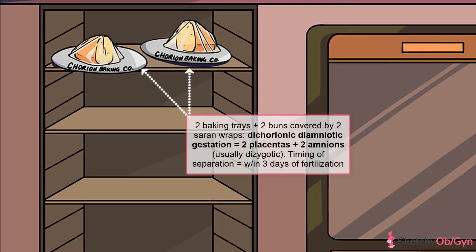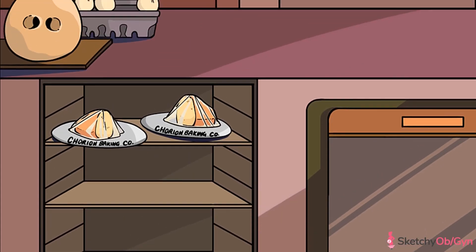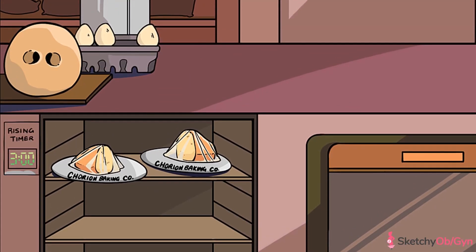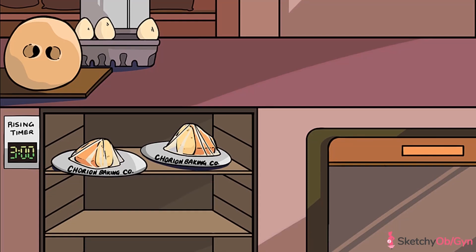Dichorionic-diamniotic pregnancies have two placentas and two amniotic sacs. They're usually dizygotic. However, if they happen to be monozygotic, division must happen within three days of fertilization in order for it to have two placentas and two amniotic sacs. That's why the rising timer next to the two buns on two separate baking trays underneath individual saran wraps is set to three hours.